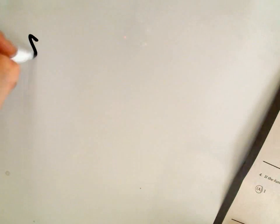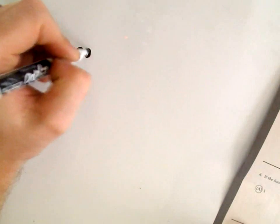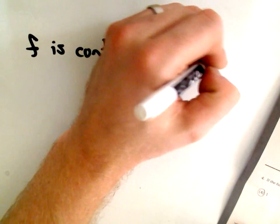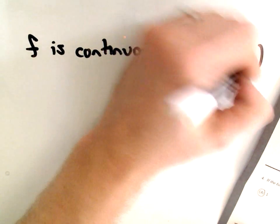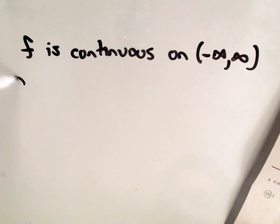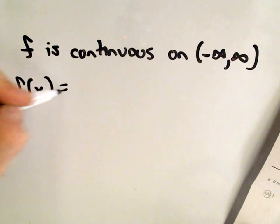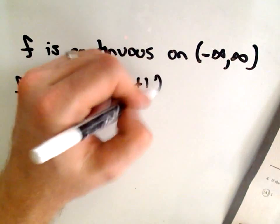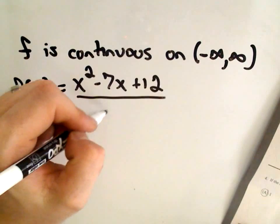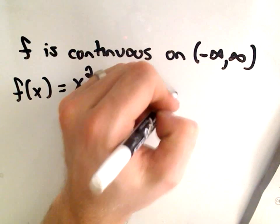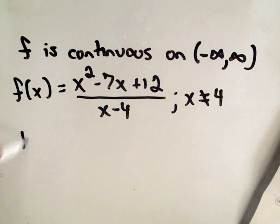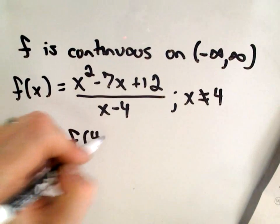Okay, number 4. It says if the function f is continuous for all real numbers, negative infinity to positive infinity, and if f(x) equals x squared minus 7x plus 12 over x minus 4, when x does not equal 4, then the value of f(4) equals what?